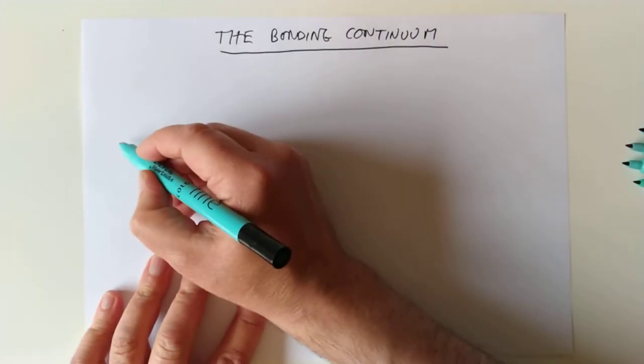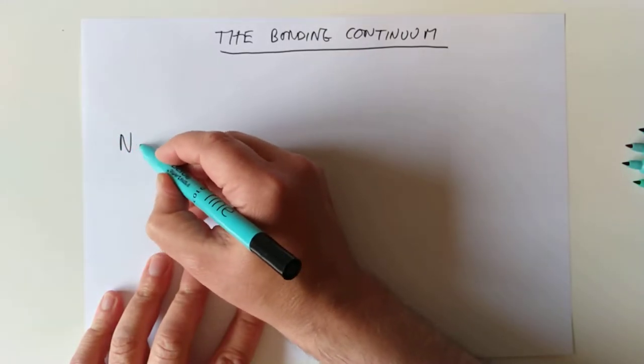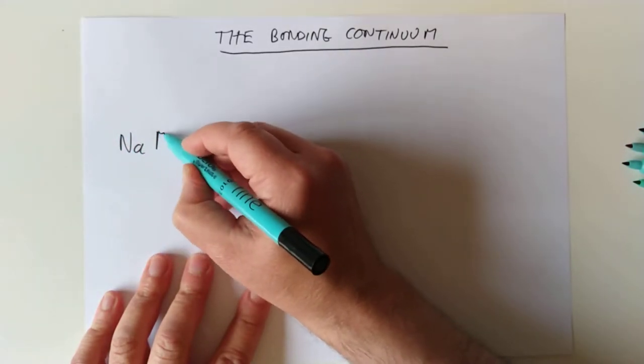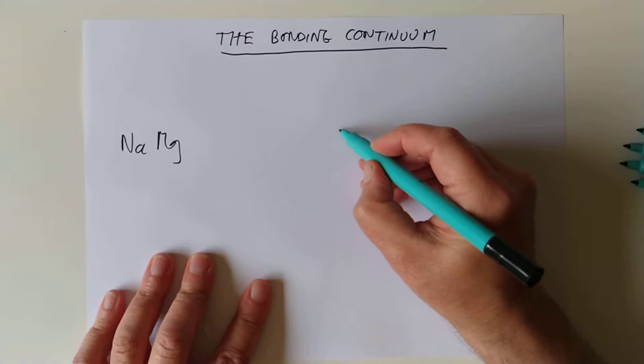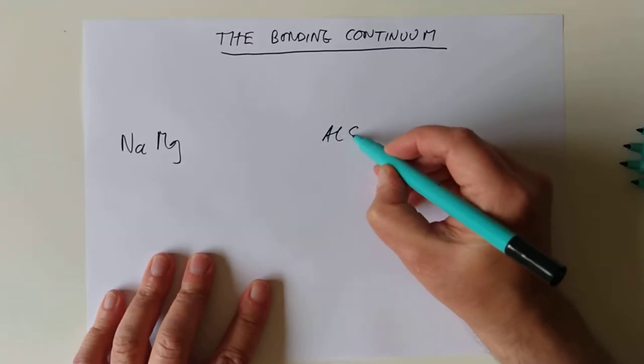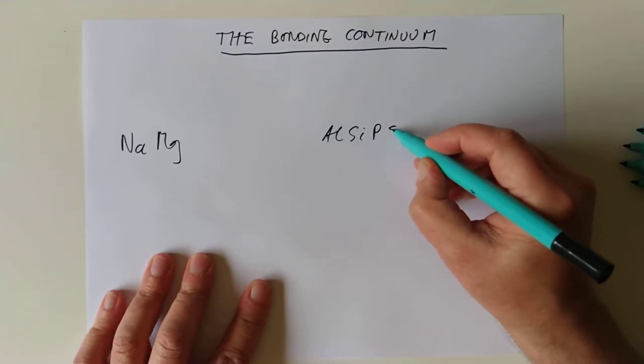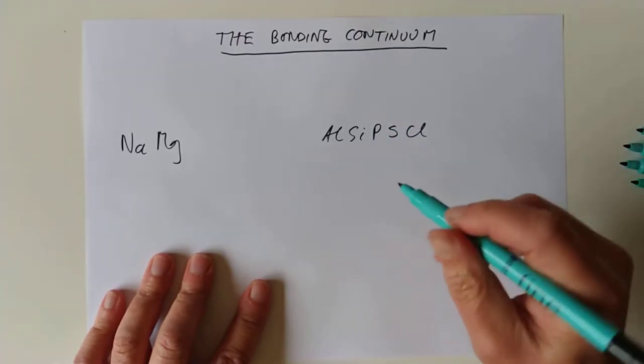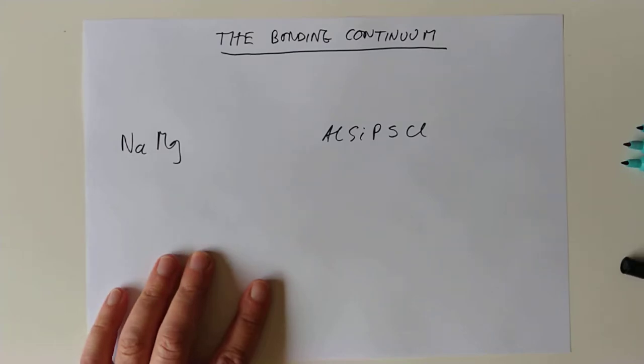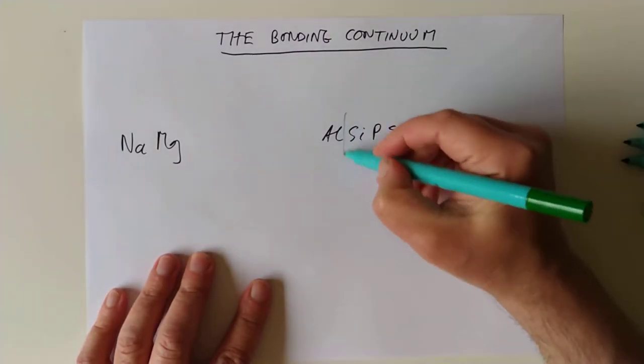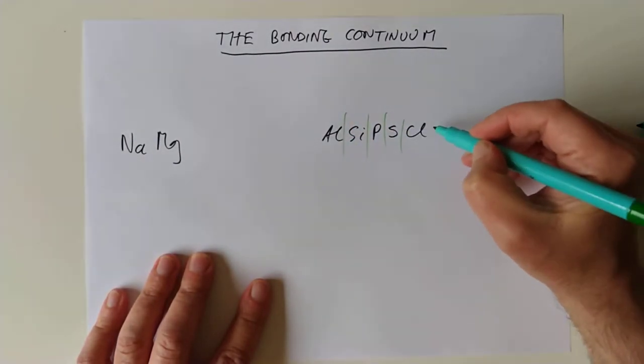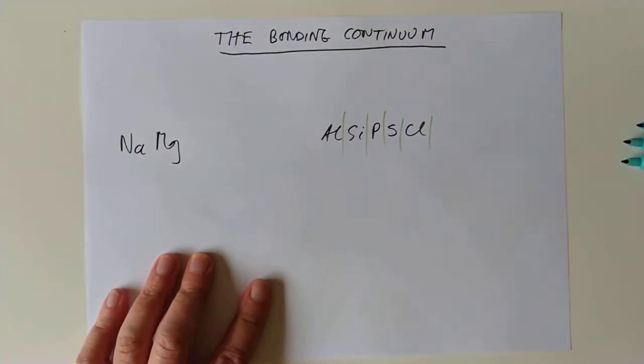So, if we have a look at the period running from the top, we're running from sodium, and then magnesium, and then we've got aluminium, silicon, and what's next? Phosphorus, sulfur, and chlorine. So, these are our groups. We won't talk about group 8. They don't play well with other children.